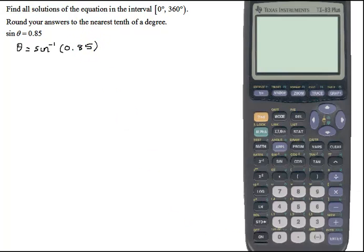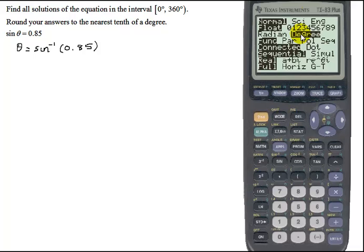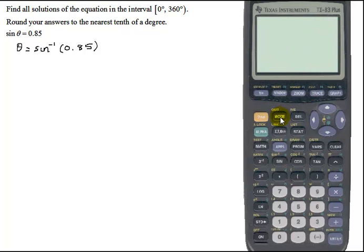So let's get our calculator and turn it on. I need to check the mode. We're in degrees. So I need to do inverse sine, which is above the sine key, so I'm going to hit second sine. Notice I get the inverse sine function of 0.85, and then hit enter, and I get 58.211 degrees.